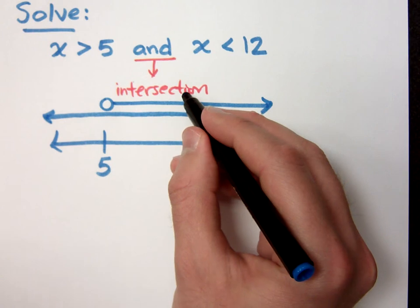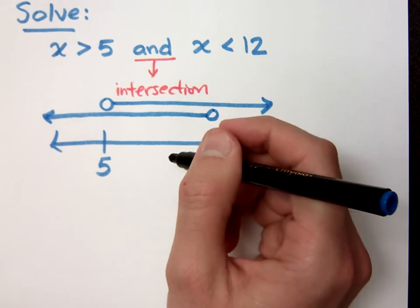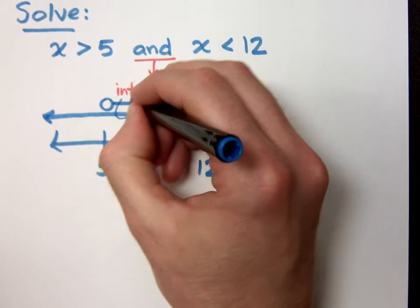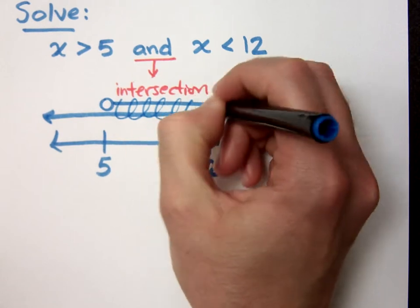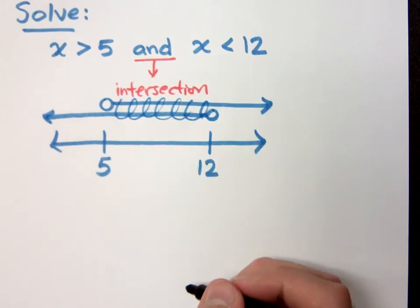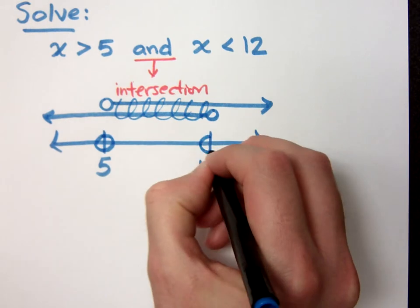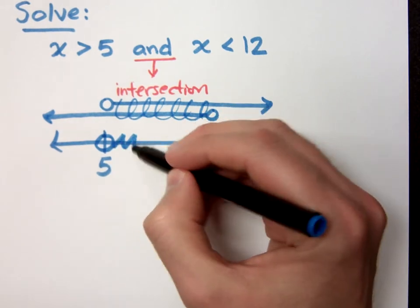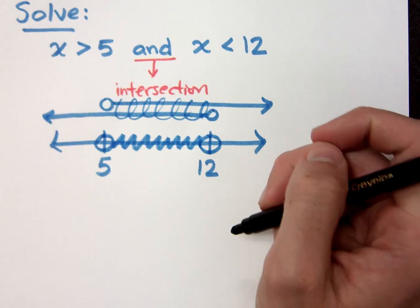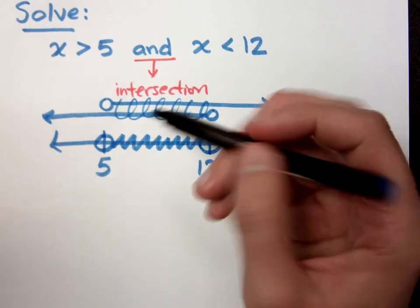Now, if I want the intersection, I need to find out where do these guys overlap, where do they intersect. And they intersect right here, in between 5 and 12. So, if I were to put that on my number line, on my answer, it's everything in between there. But, am I including 5?